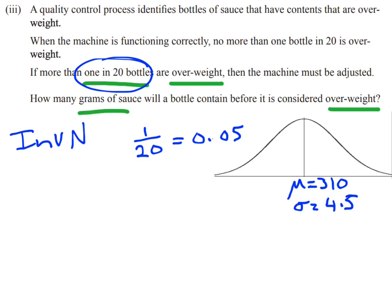Now it's talking about bottles being overweight. So we're talking about bottles whose weights are at the top end here. So you can see I'm just coloring in that top end. And that top end should only be 0.05. It should not be bigger than that if the machine's working correctly.